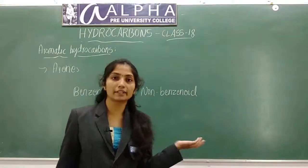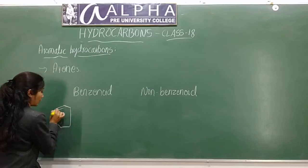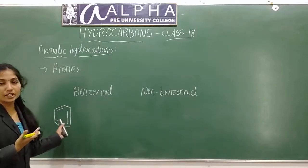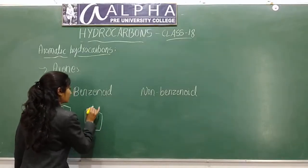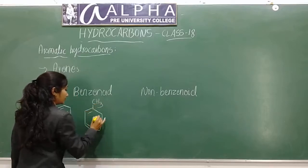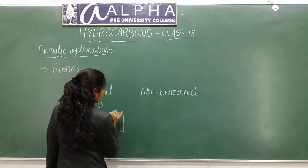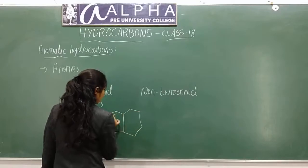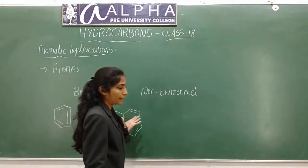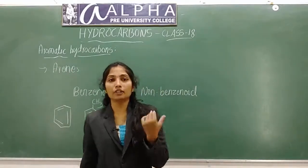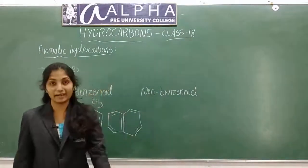Let me take a few examples. Benzenoid aromatic compounds contain a benzene ring — examples are benzene, toluene (CH3), naphthalene, naphthalene balls, and biphenyl. Furan and thiophene are examples of non-benzenoid aromatic compounds.